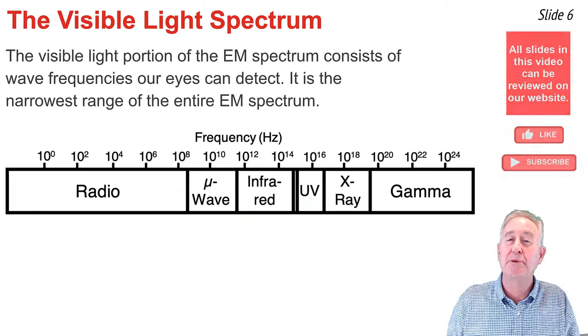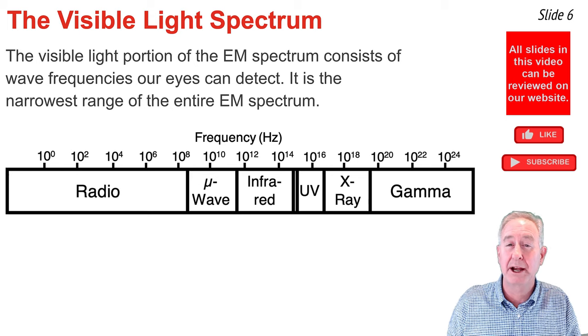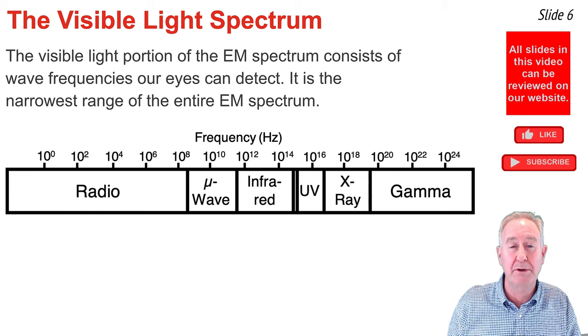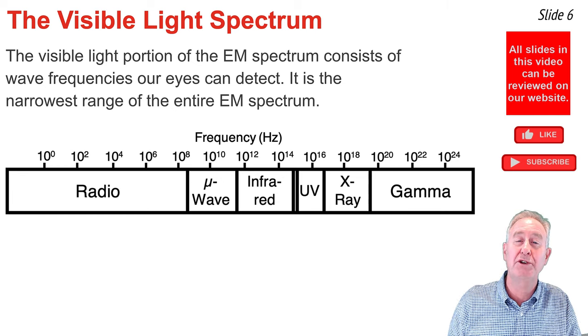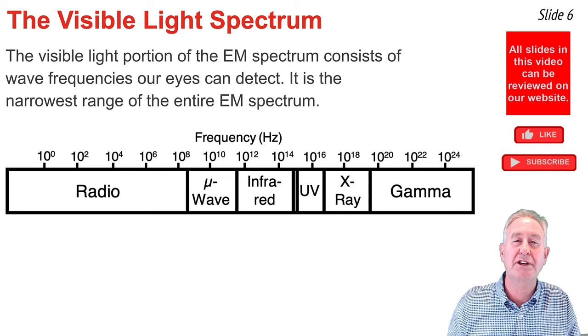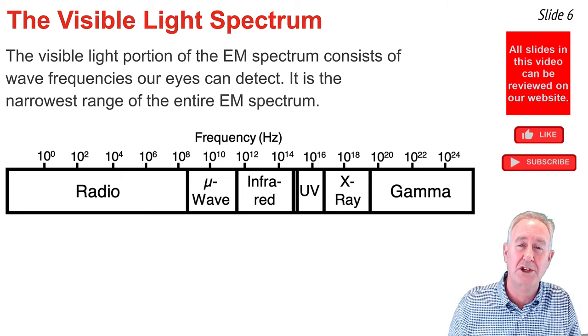As mentioned previously, the electromagnetic spectrum consists of a vast range of frequencies. There are waves in the gamma ray region that have frequency values that are 24 powers of 10 greater than the frequency values of some waves within the radio wave section.